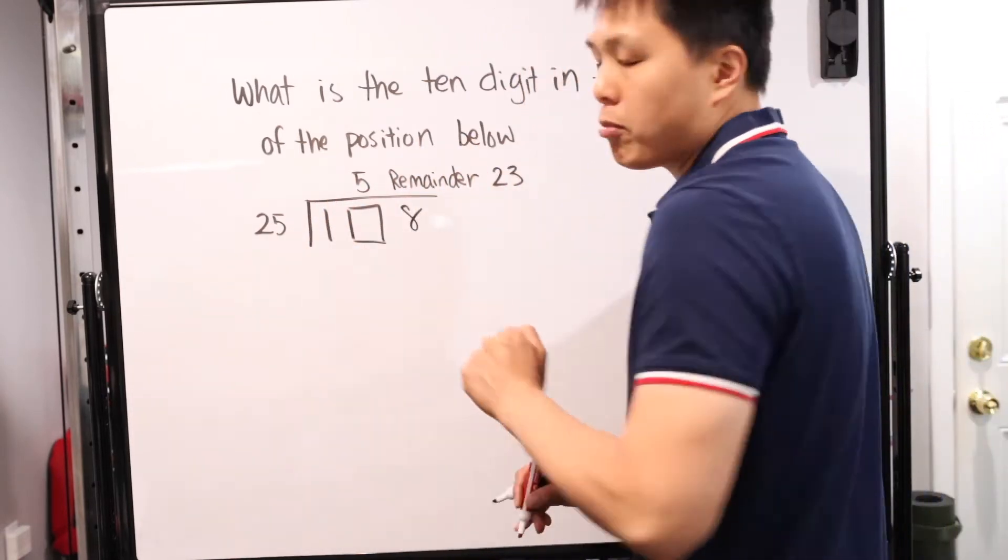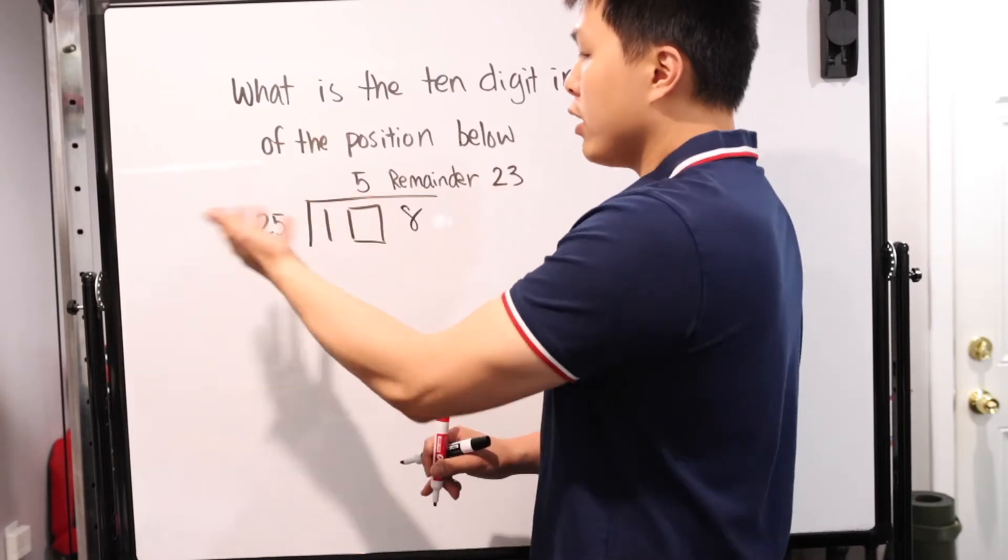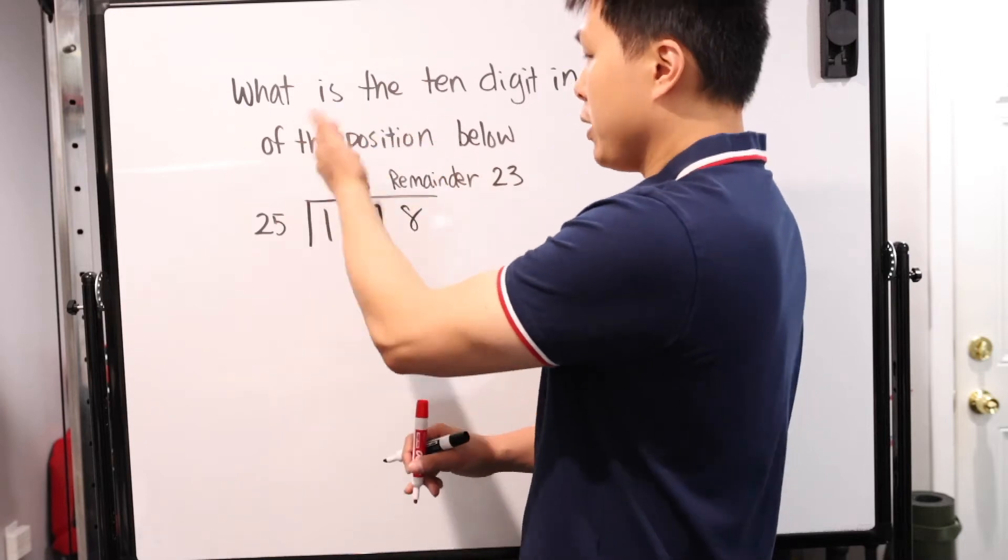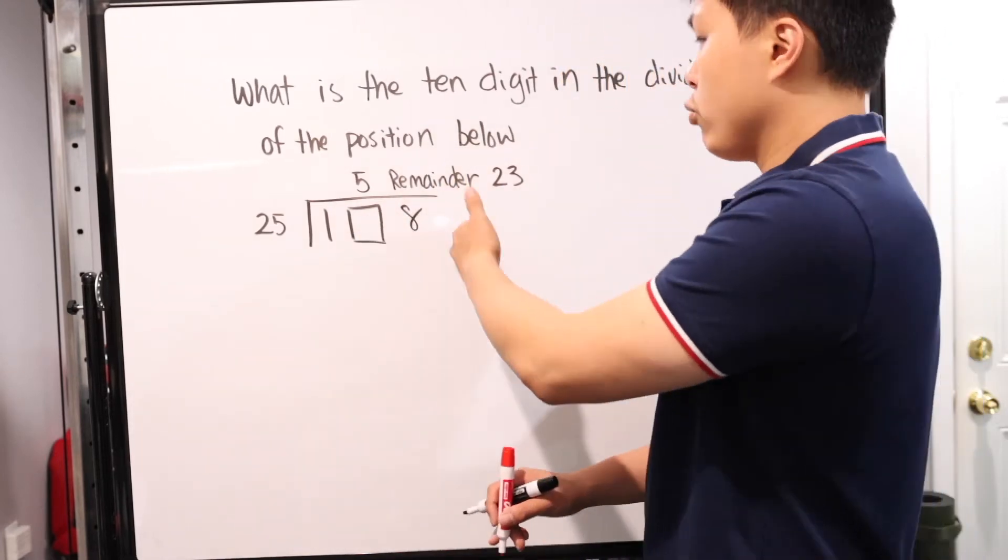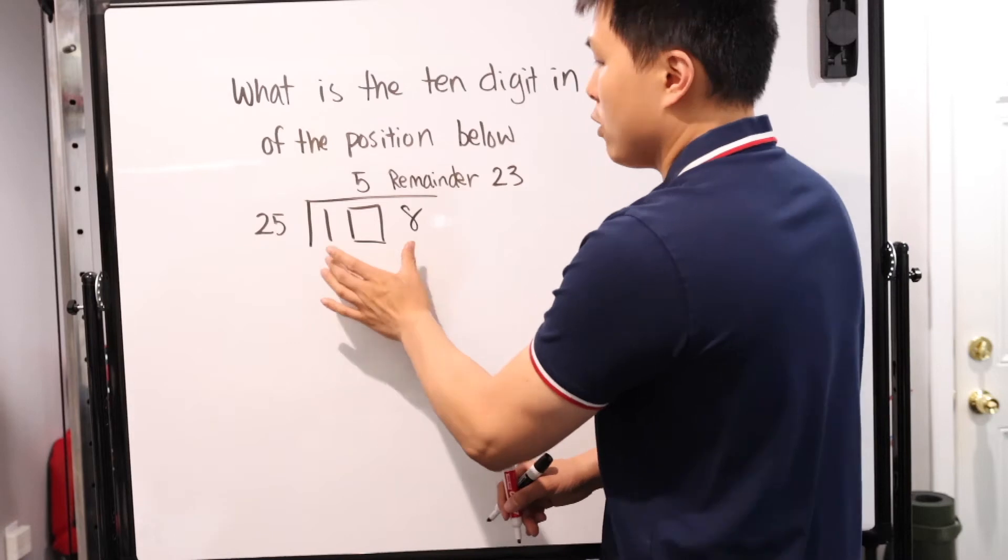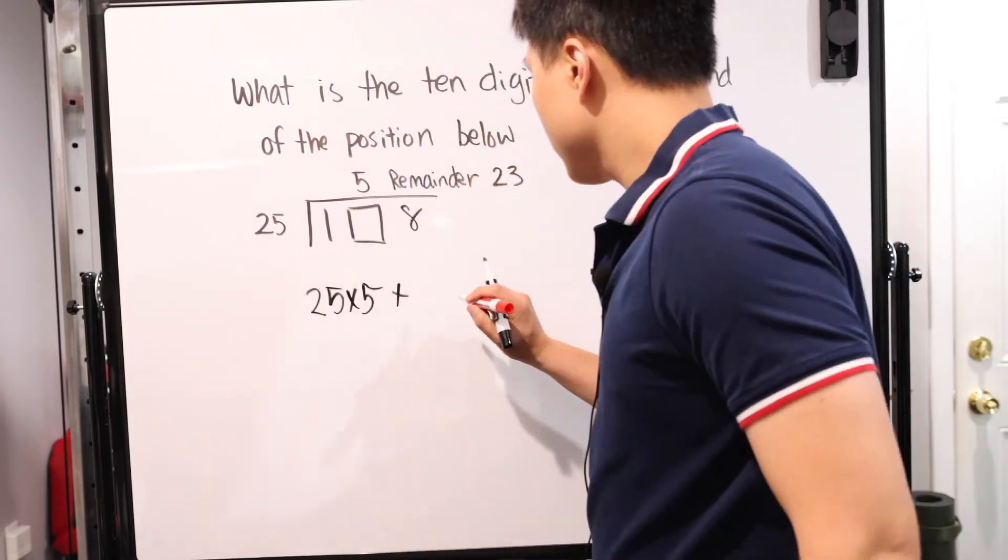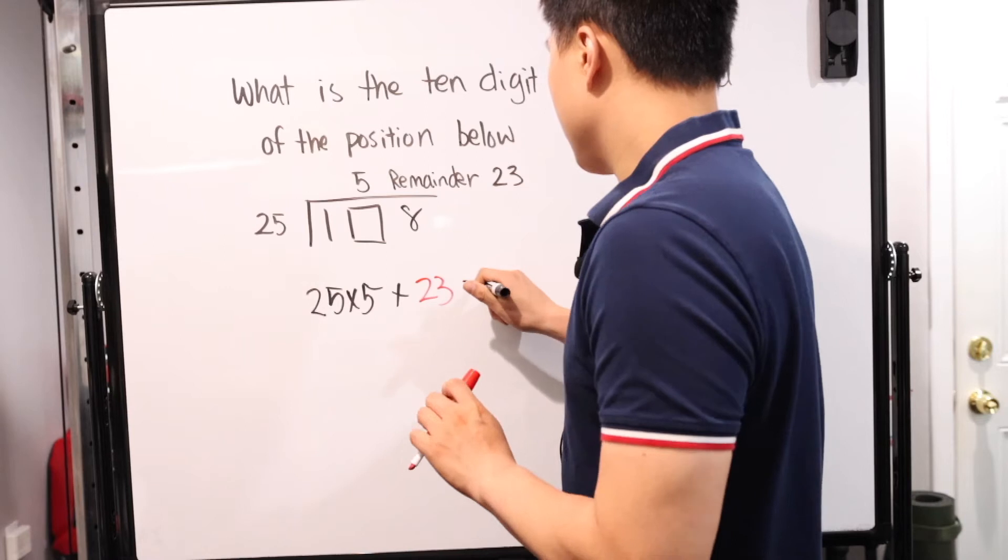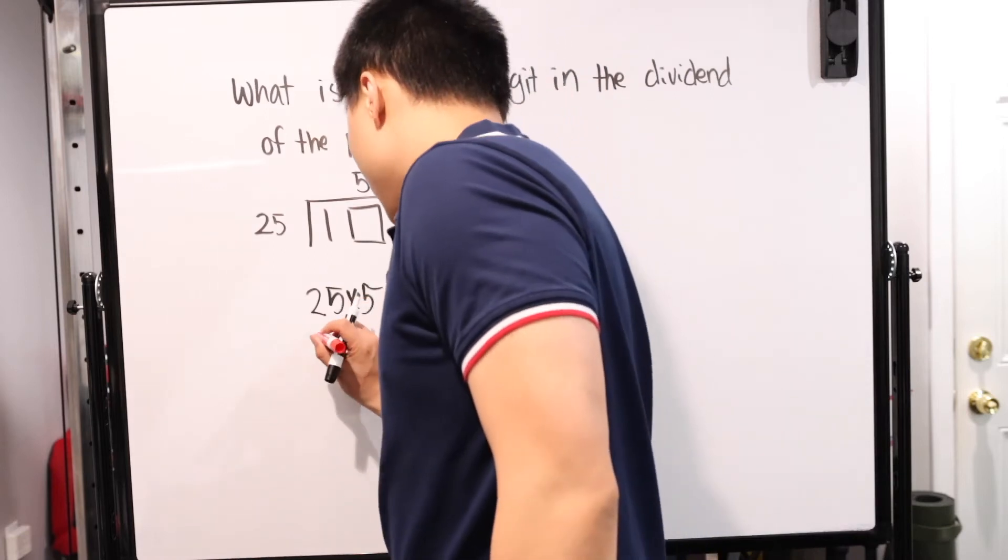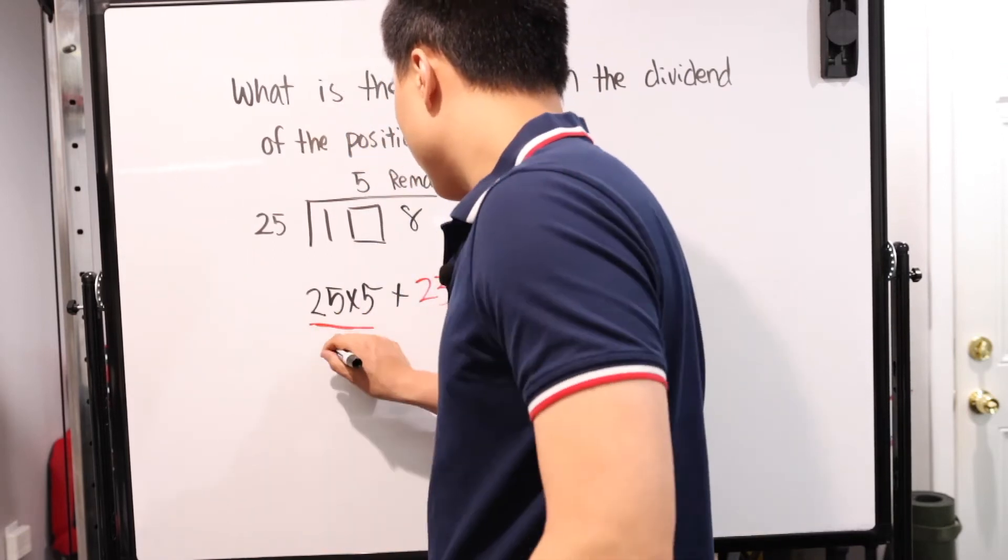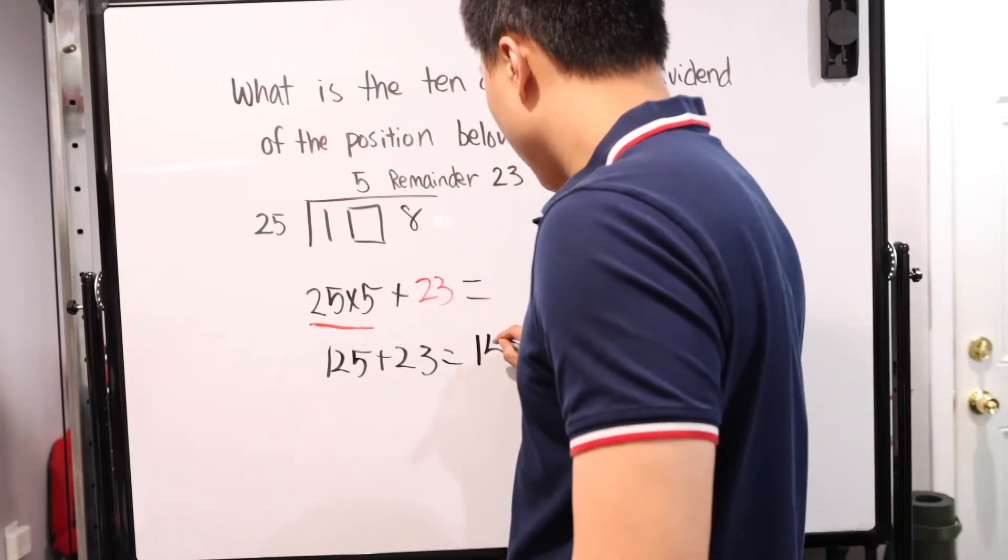When we look at the structure, normally we're looking for the answer, but this problem gives us that. It tells us the end result is 5 remainder 23. If we understand the structure, we can figure out the missing number. We know 25 times 5 is as close to this number without another variation, without 6. It only can go in there 5 times, and then you have what's left over, which is 23. So if we reverse that procedure, we'll know exactly what that number is.